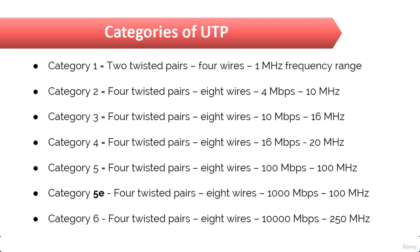CAT 6 became a standard back in June 2002 and you would usually use it as a riser cable to connect floors together. There are two more types of categories: Category 6a and Category 7.